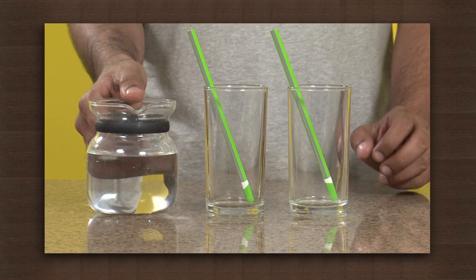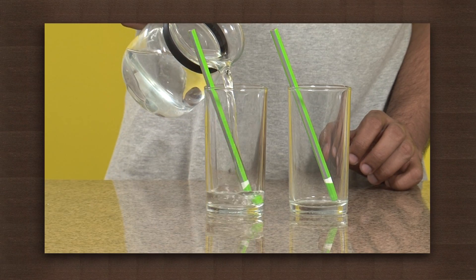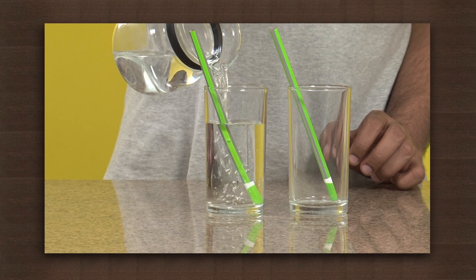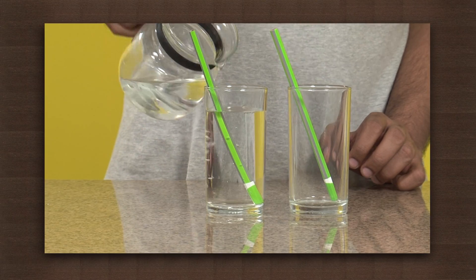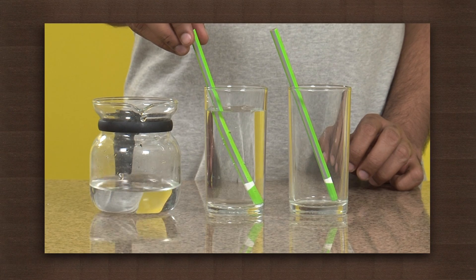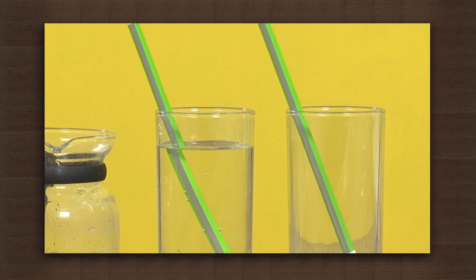Now pour water in one of the glasses. What do you see? The pencil appears bent at the boundary between air and glass. But is the pencil really bent?